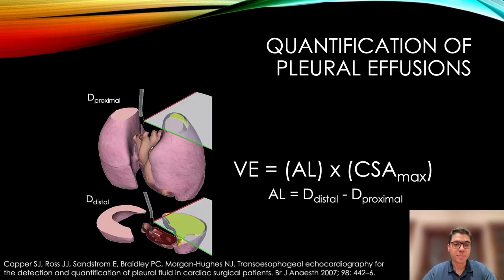Another method has been described in the British Journal of Anesthesia in 2007. In this method, the depth of the probe at the most proximal level at which the effusion can be seen is noted. Then the probe is pushed down to the most distal level where the effusion can be located, and this depth is again noted. The maximal surface area is also calculated. The volume of the effusion then corresponds to the distal depth minus the proximal depth, times the maximal surface area.